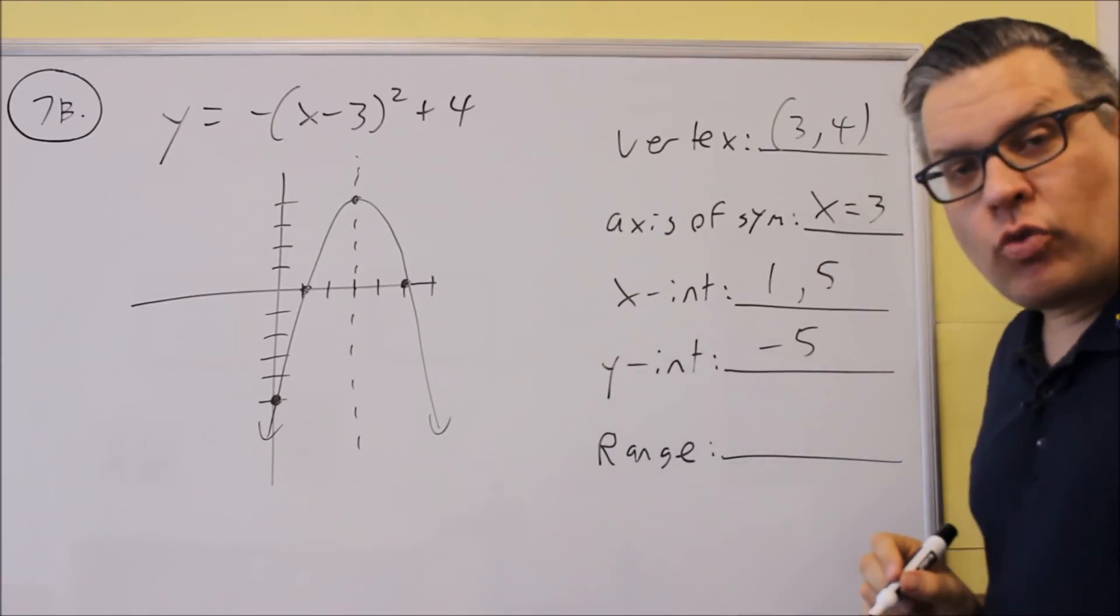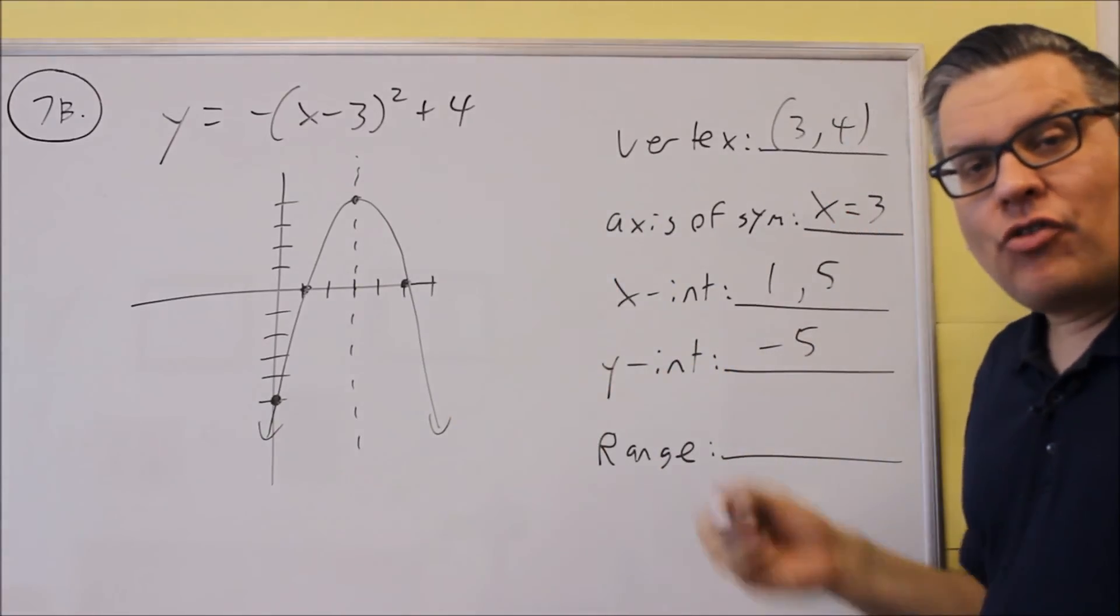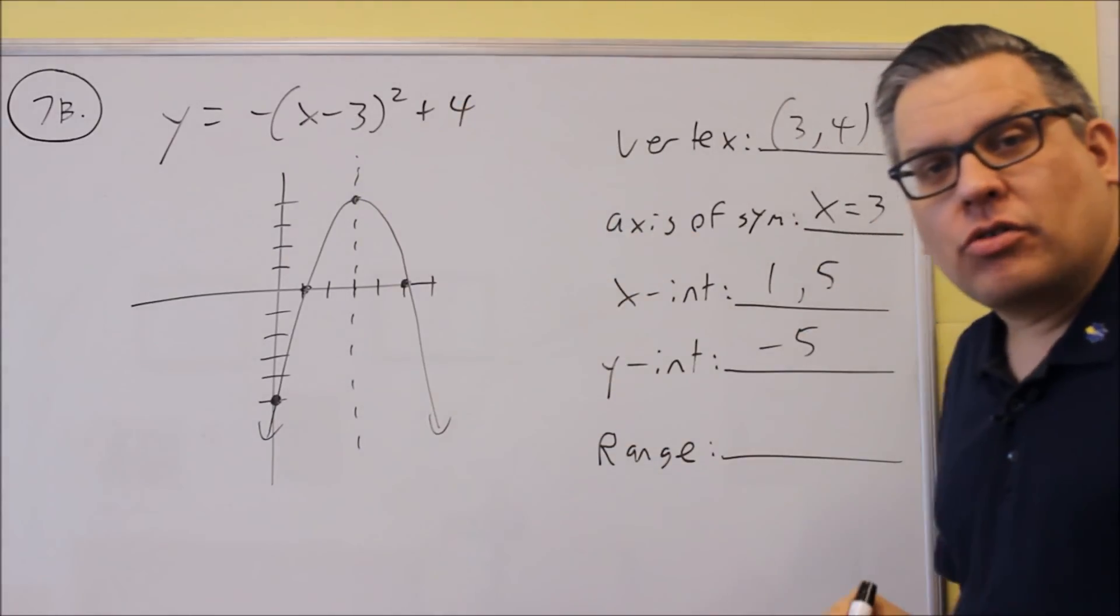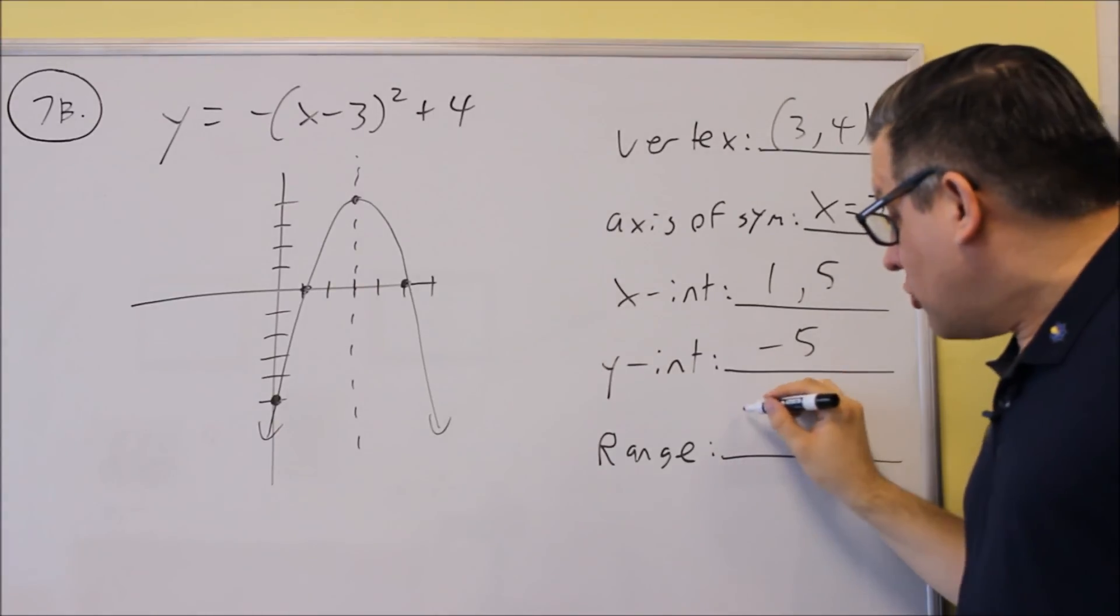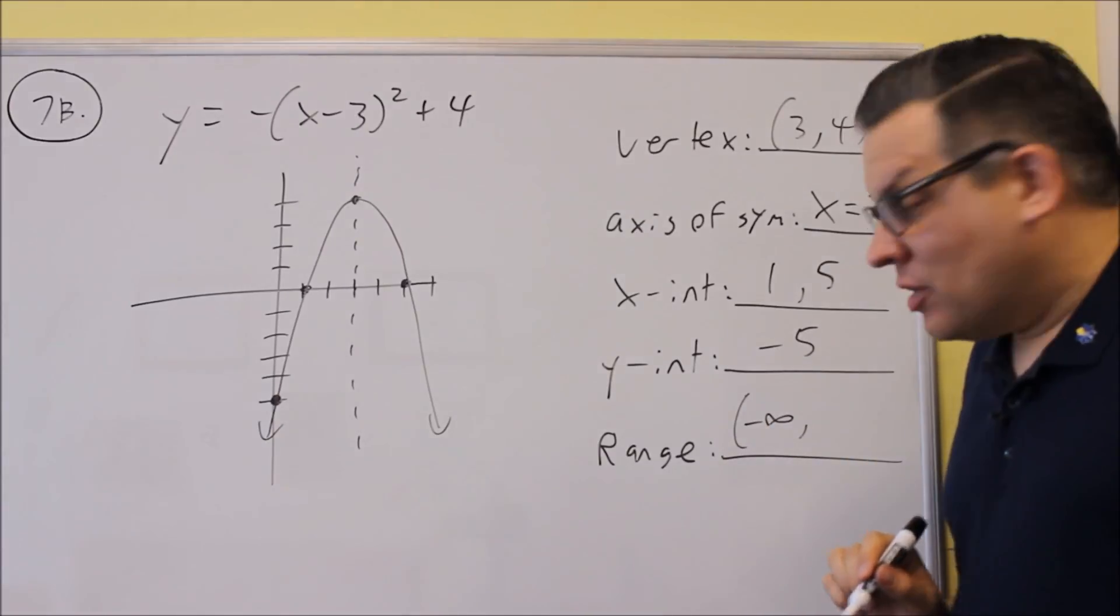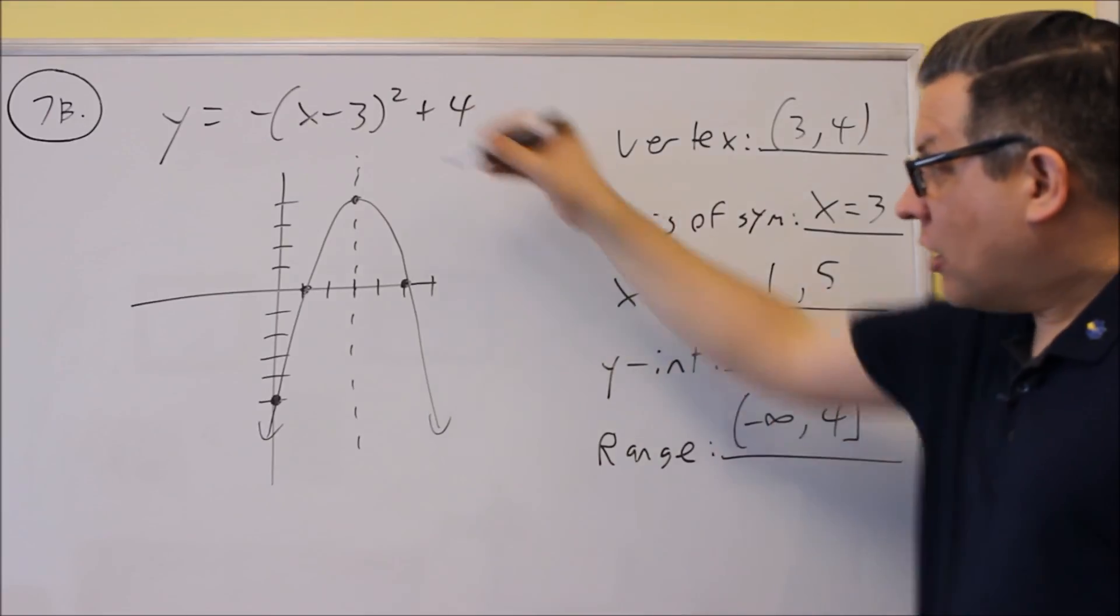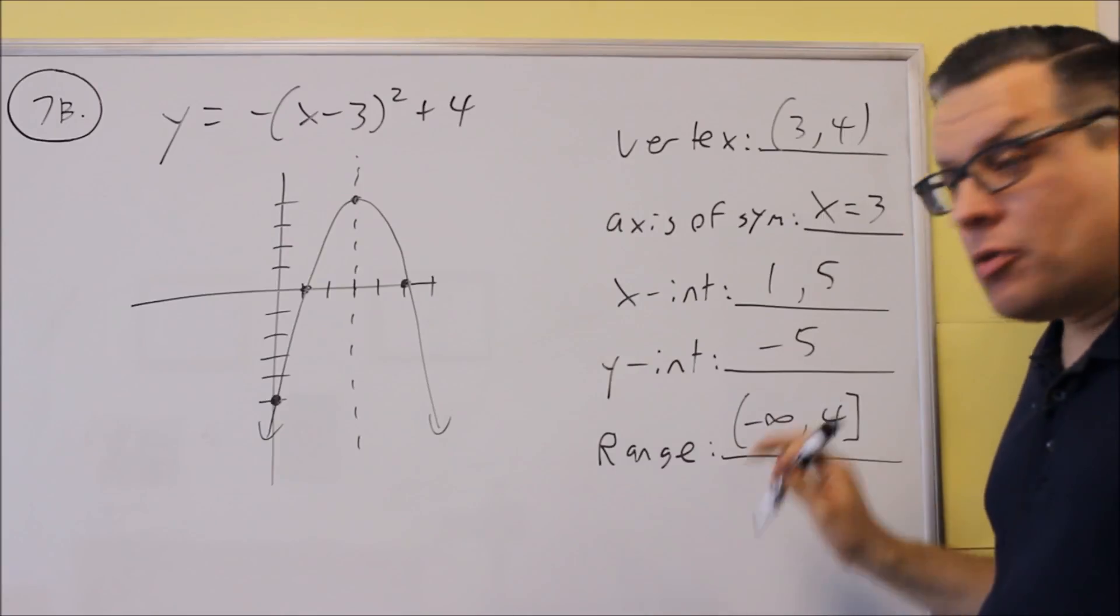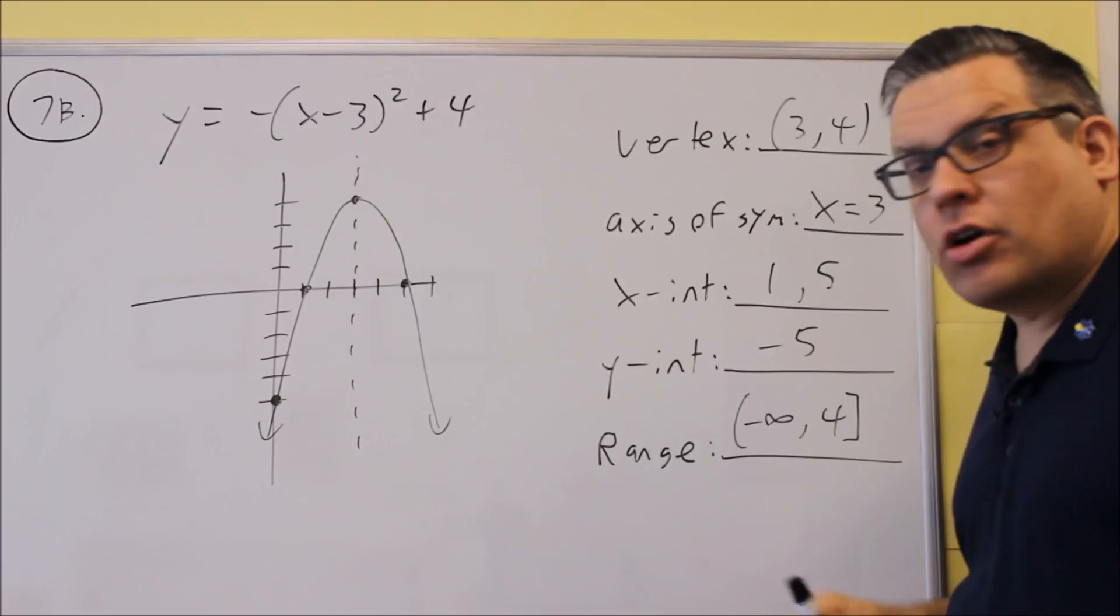And now the last thing we ought to do is range. Range is talking about the y values that the graph uses. For this one, the highest y value we have is 4, and it goes all the way down to negative infinity. Make sure you always put the smaller number first. You don't want to start with 4. We're going to start with negative infinity since it's smaller than 4. So we're going to do negative infinity up to 4, and 4 is going to have a bracket on it because it does include that point. So it means that all the y values that are used are only values, basically, that are less than 4, and that's shown here on the graph.